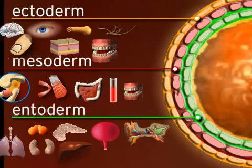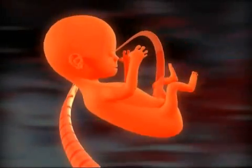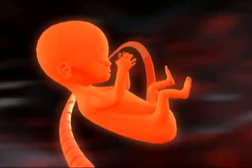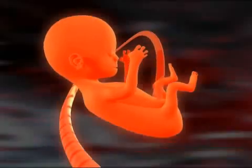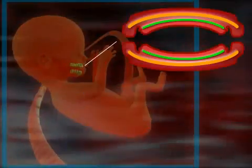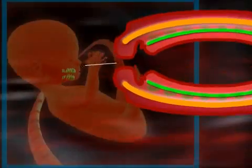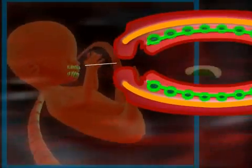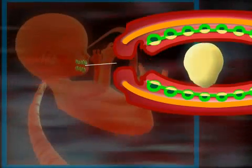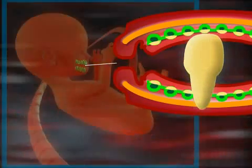We will now skip a few steps and go on to the embryo. In its jaw, which at this stage has the consistency of connective tissue, ecto- and mesodermal cells form dental ridges, which bunch up to form tooth buds, which later become teeth.